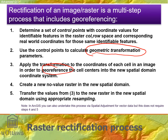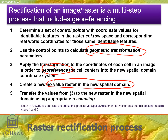Once it's in the real world coordinate system, 99.99% of the time the raster will not be orthogonal. It will be scaled or warped in some way so that the cells are no longer oriented north, south, east, west. So we have to create a no-value raster in the new spatial domain — the real world reference system — and then transfer the values from the old raster to the new raster through resampling.